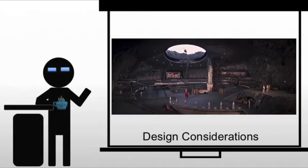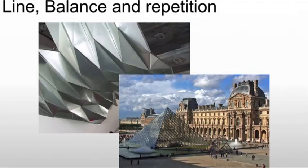There are certain design considerations that every architect has to take into account when creating a structure, as we see here. First, at the most basic level, you need to deal with line, balance, and repetition. Each of these elements — line, balance, and repetition — are identical to how we dealt with them in terms of two-dimensional art as well as sculpture.